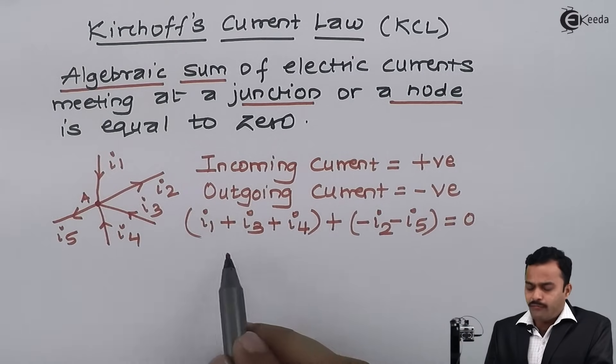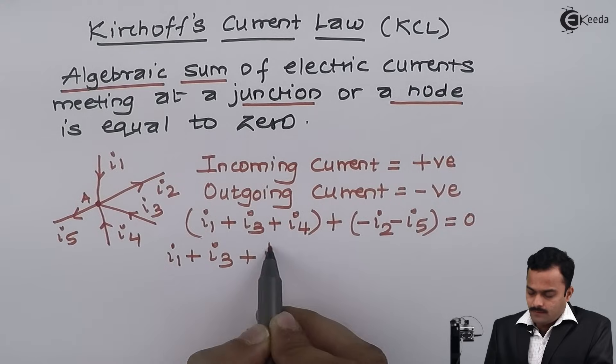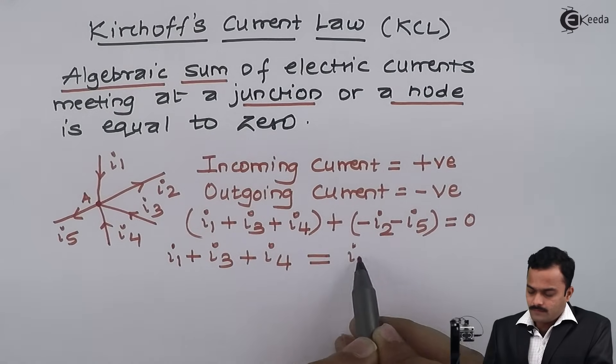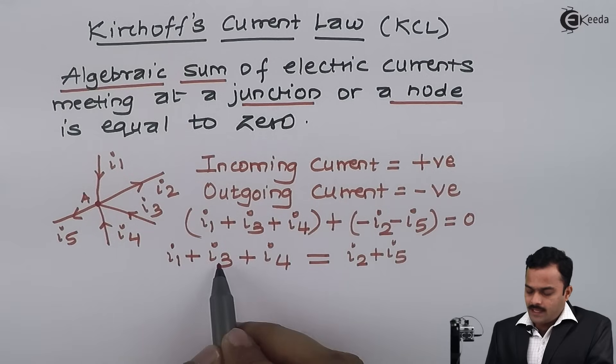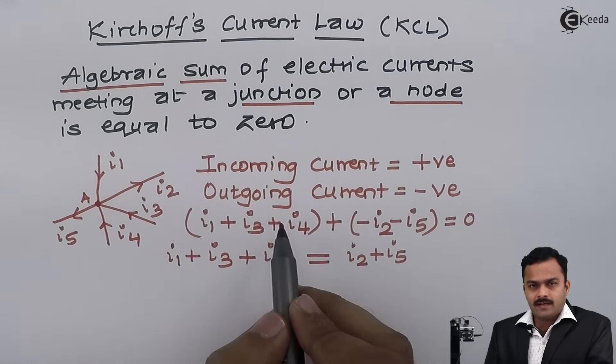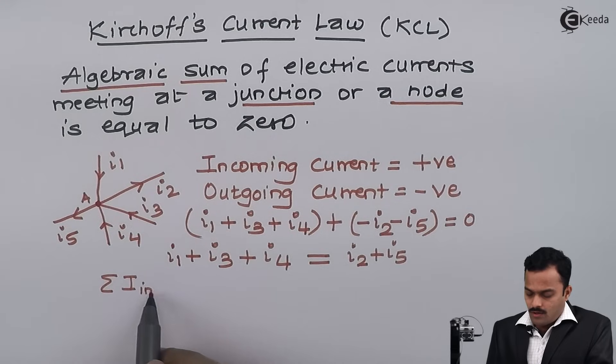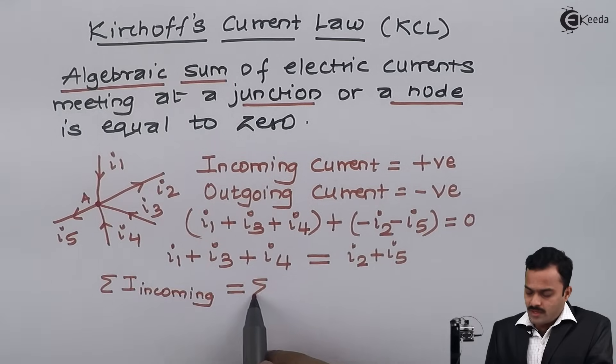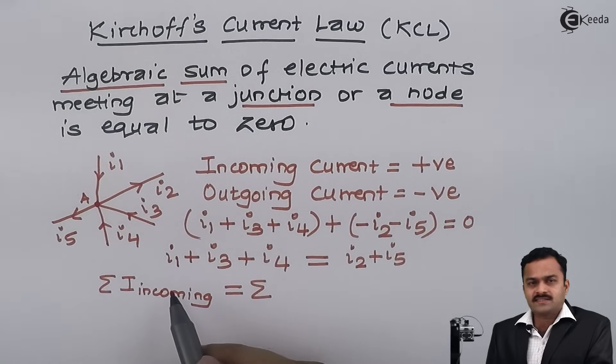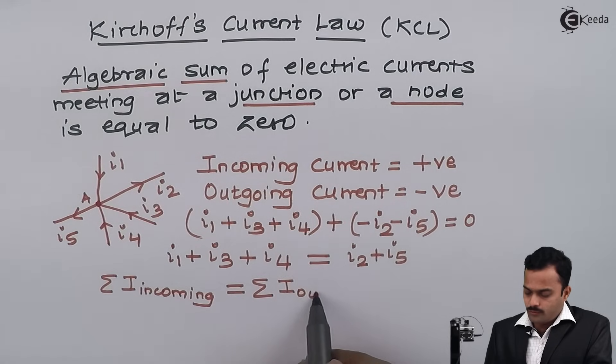Now I am generalizing this statement. i1, i3, and i4 are all incoming currents, so generally I can write summation of incoming currents. i2 and i5 are outgoing currents. So in a circuit with n number of branches connecting to a node, I can generalize: summation of incoming currents equals summation of outgoing currents.